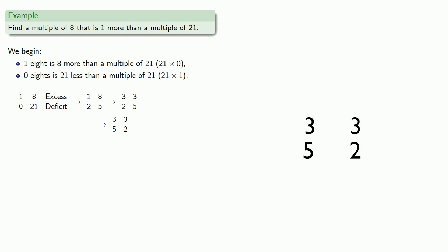Now subtract 2 from 3. Multiply the corners and add. And that tells us that 8 eights, 64, is 1 more than a multiple of 21.